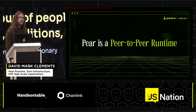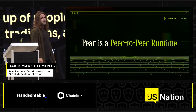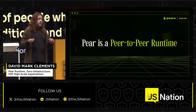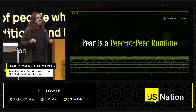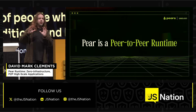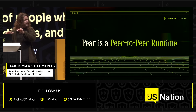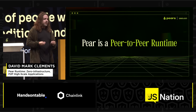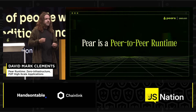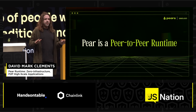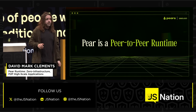Pair is a peer-to-peer runtime, and by peer-to-peer, I mean fully peer-to-peer, local state — not like blockchain, which is global state and federated — but literally peer-to-peer. The data lives on user devices and only on user devices. No cloud, nothing, just the peers.